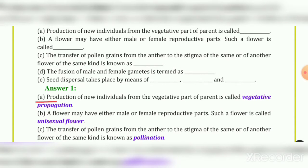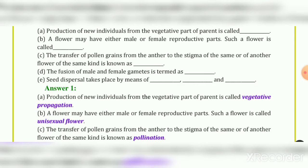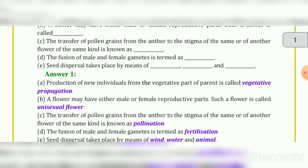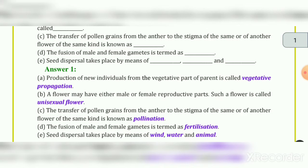Production of new individuals from the vegetative part of a parent is called vegetative propagation. The answer is vegetative propagation.